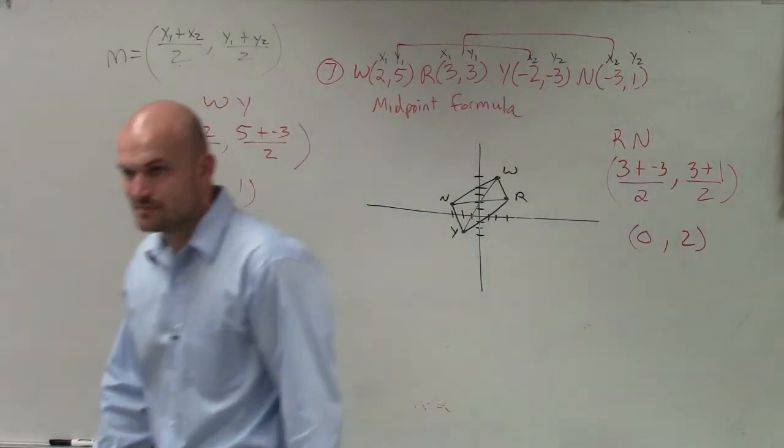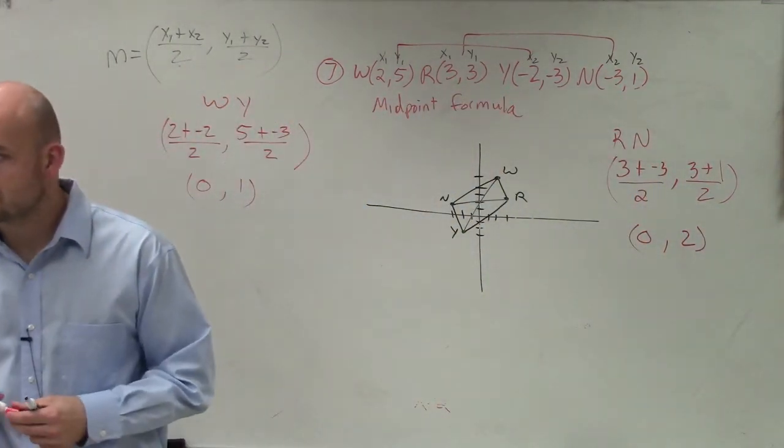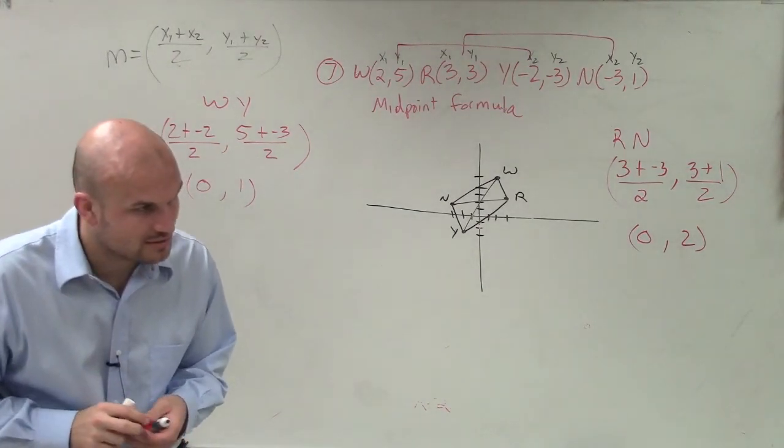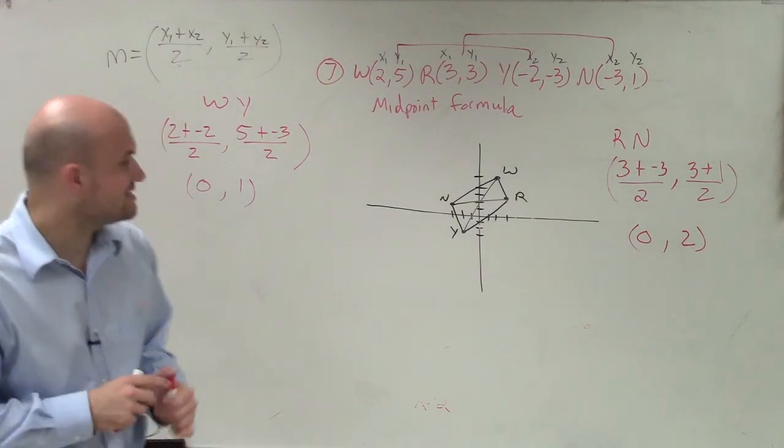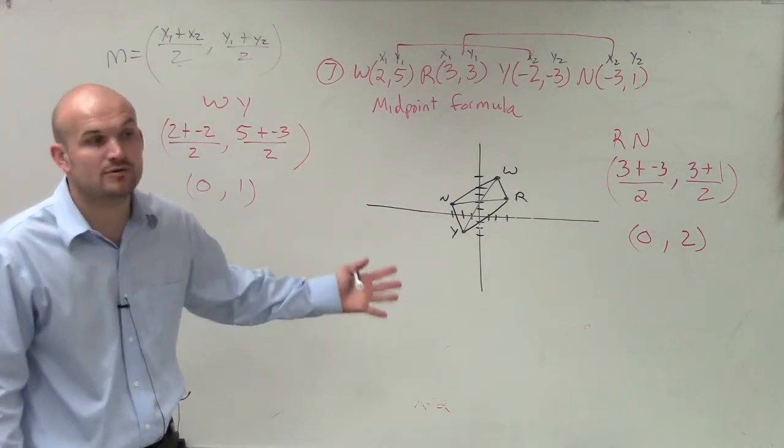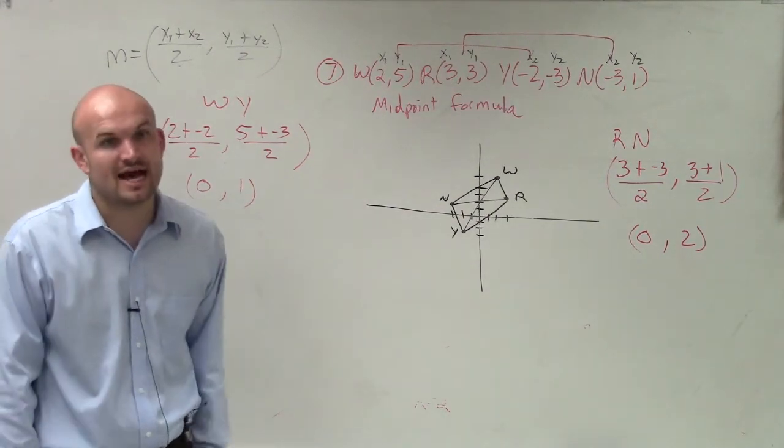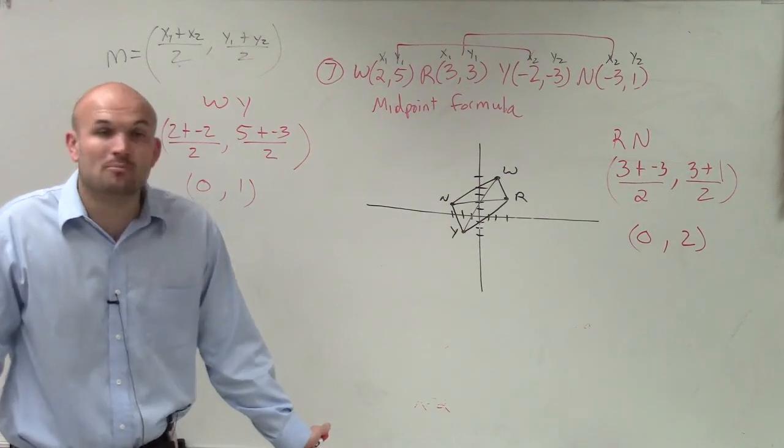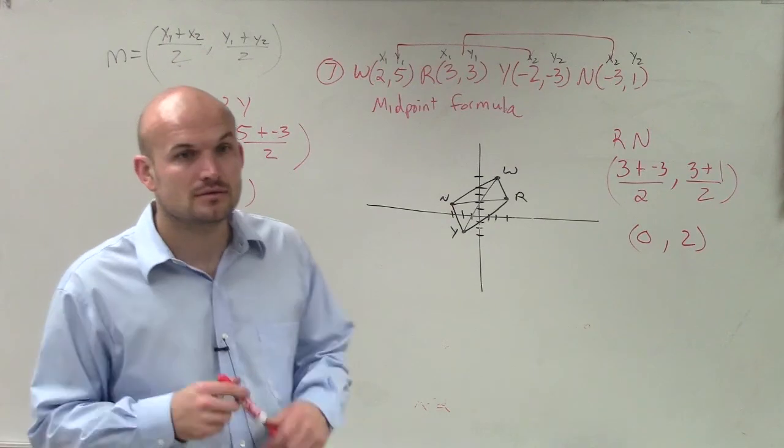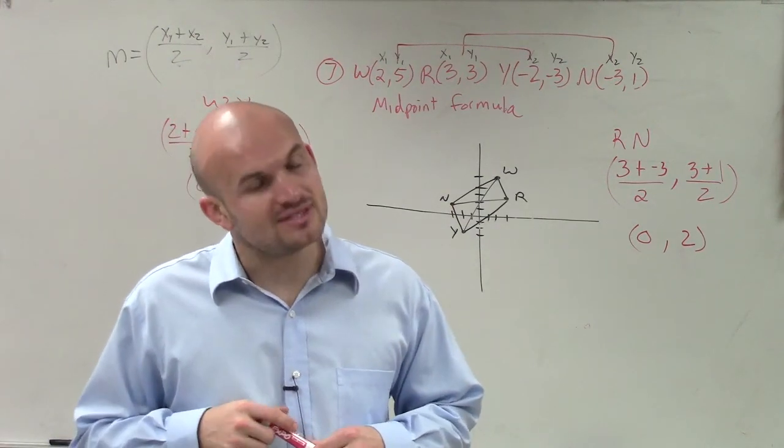So do they have the exact same coordinates? No. No, so therefore their midpoints are not the same. Therefore, this is not a parallelogram. It's not a parallelogram. They do not share the same midpoint of their diagonals. Therefore, their diagonals don't bisect each other, and therefore, they're not a parallelogram. So you can say, no, it's not a parallelogram.